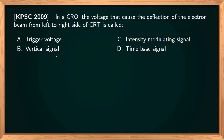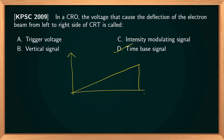In a CRO, the voltage that causes the deflection of the electron beam from left to right side of the CRT is called the time-base voltage, also known as sweep voltage. It increases linearly with time and is applied to the horizontal deflection plates so that the electron beam moves from left to right.